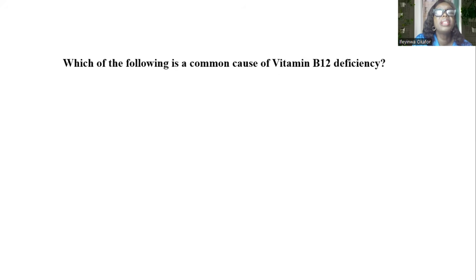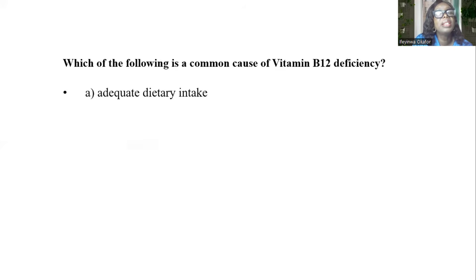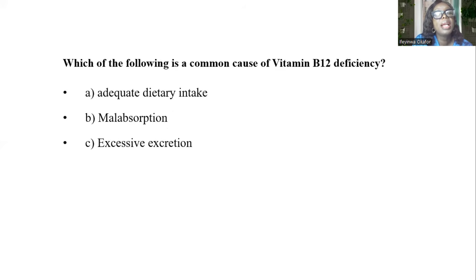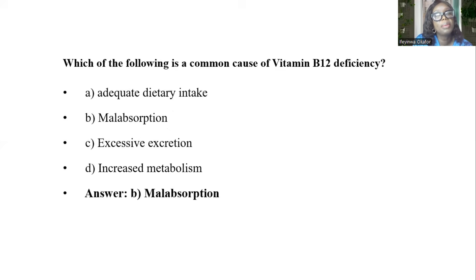Which of the following is the common cause of vitamin B12 deficiency? A, adequate dietary intake. B, malabsorption. C, excess excretion. D, increased metabolism. The answer is B, malabsorption.